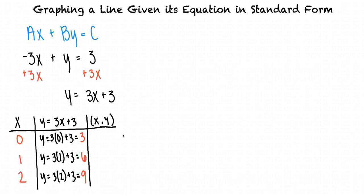This tells us that the ordered pairs (0, 3), (1, 6), and (2, 9) are solutions to the original equation, and that these points lie on the line negative 3x plus y equals 3.